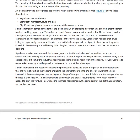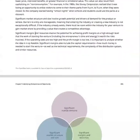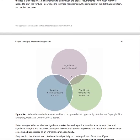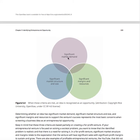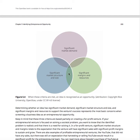I need to see significant market demand. What does that market look like? Is it just Spartanburg County? Is it the state of South Carolina? Is it the East Coast? Tell me how many people and what you're trying to do. We're looking for something with significant market demand, significant market structure and size — it doesn't have to exist yet, but convince me you could pull it off. And significant margin in resources — can you make money doing this with enough customers and sustain it over time?